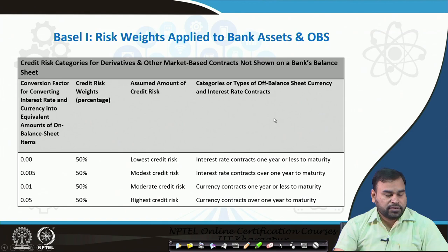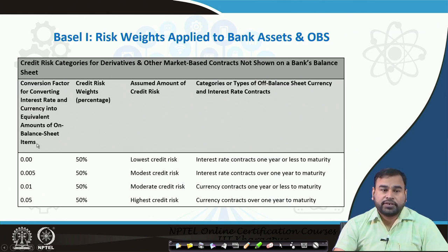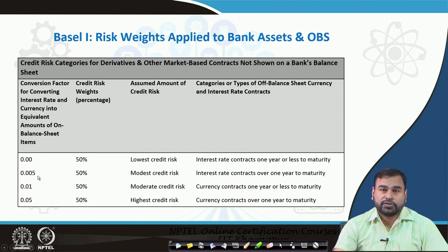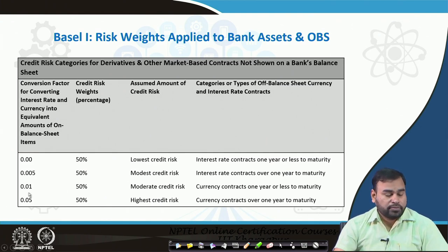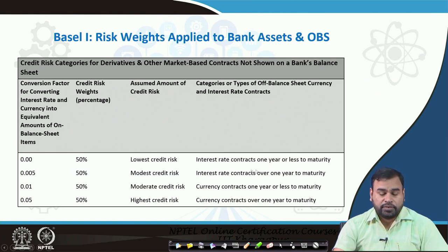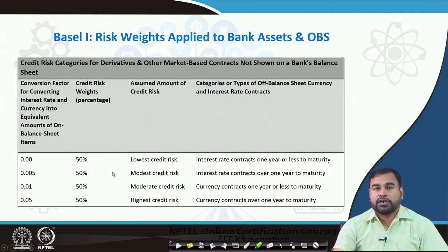Looking at conversion factors for converting interest rate and currency contracts into equivalent on-balance sheet amounts: zero conversion factor for interest rate contracts with one year or less to maturity; 0.5% (0.005) for interest rate contracts over one year to maturity; and 1% conversion factor for currency contracts over one year to maturity. This means currency contracts are riskier than interest rate contracts.